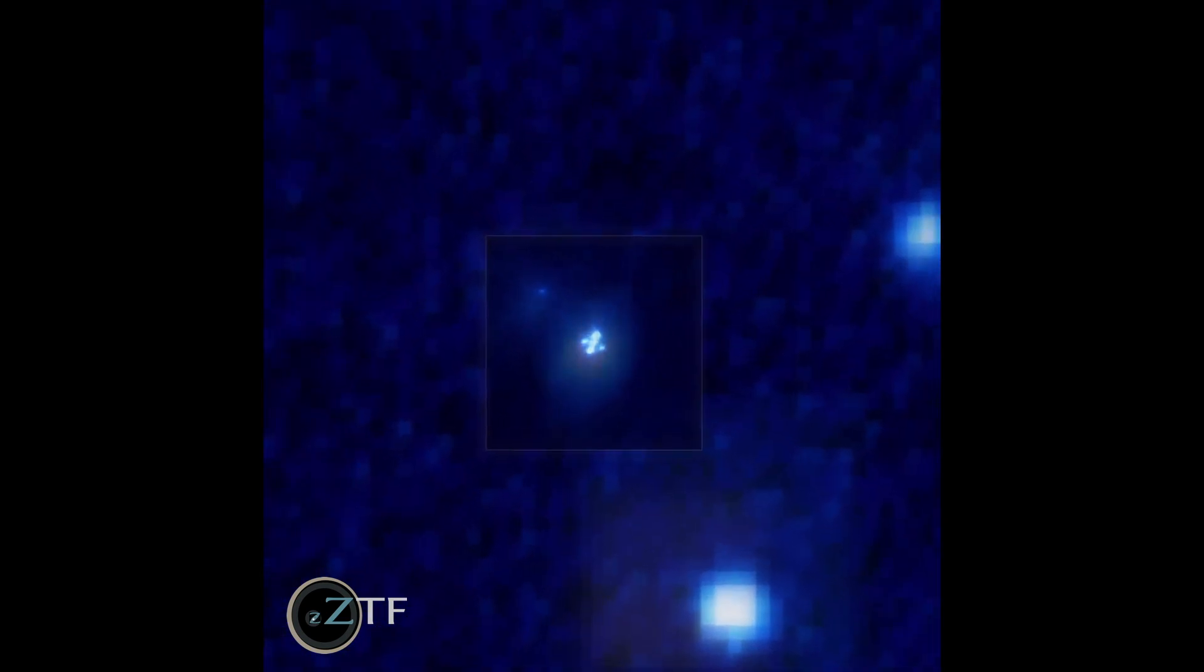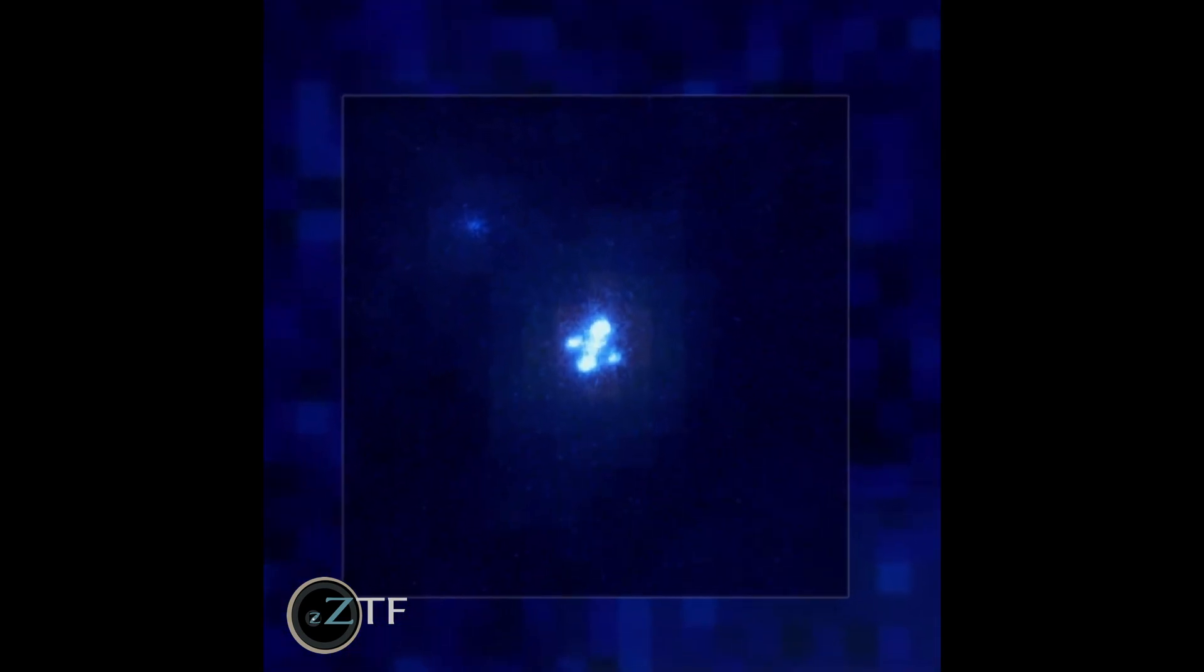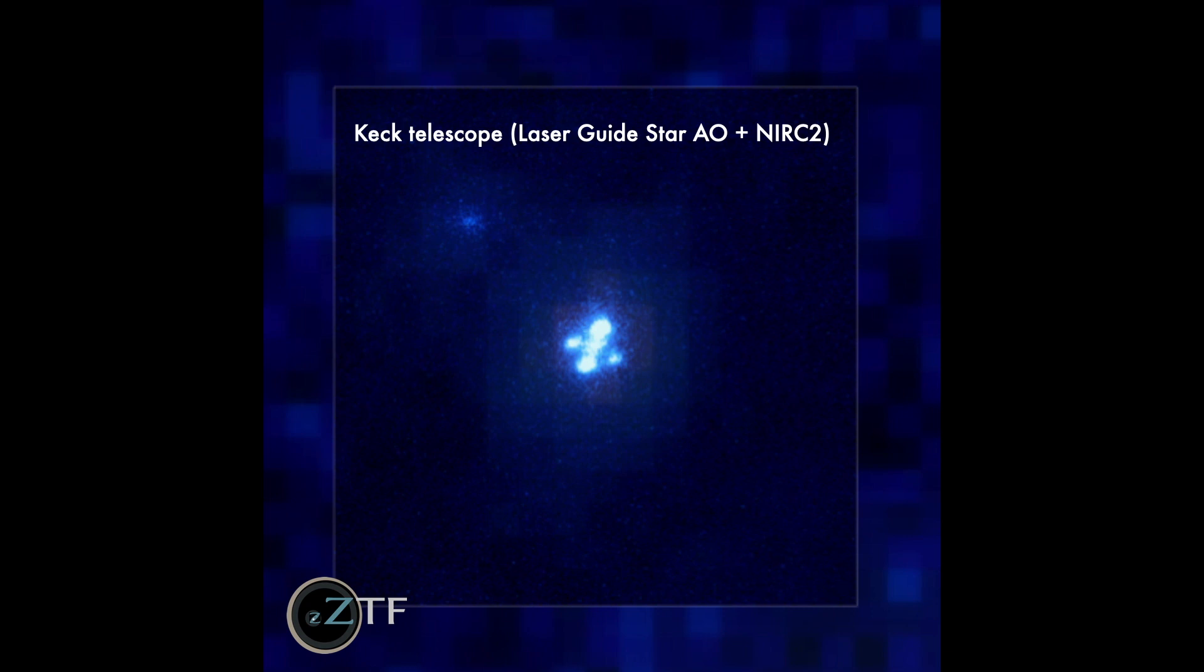Finally, we zoom in even further with observations from the powerful Keck Telescope on Mauna Kea in Hawaii. And what do we find? Four dots, corresponding to four magnified images of Supernova Zwicky.